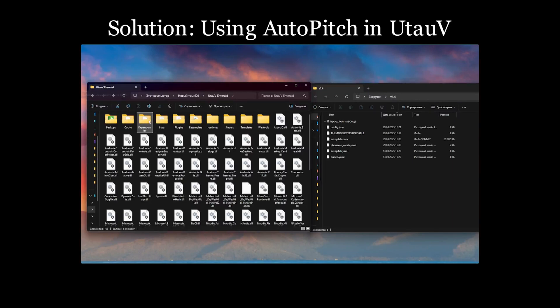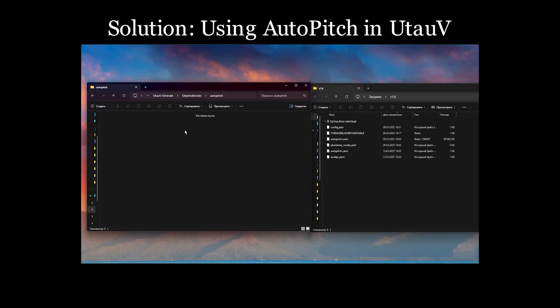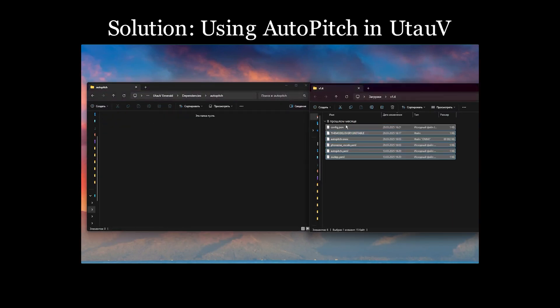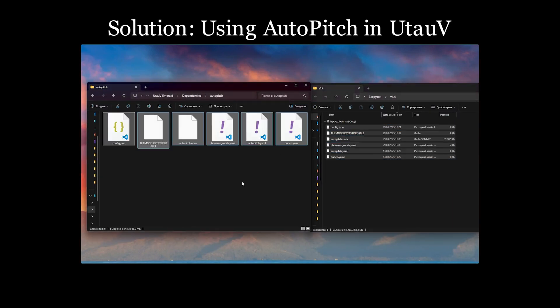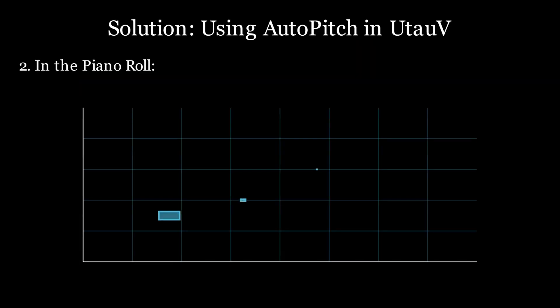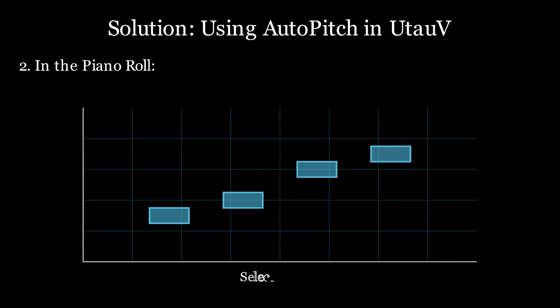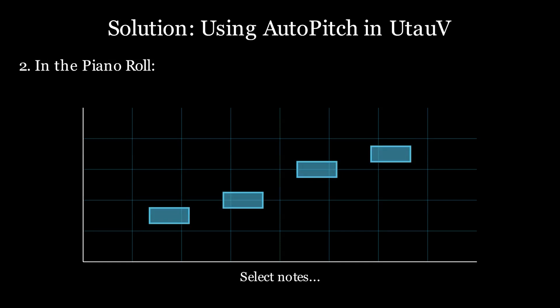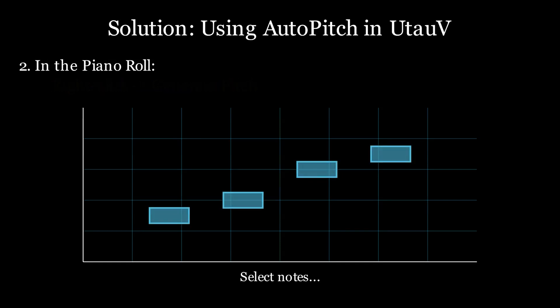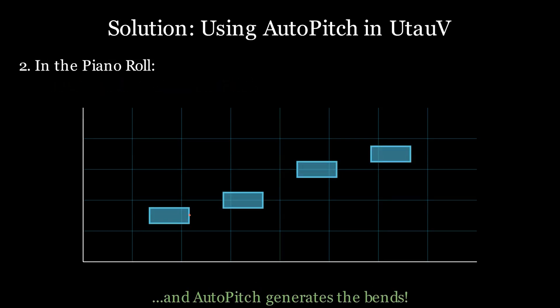First things first, place the model files in OpenUTAU into the AutoPitch folder in Dependencies. Then, in the piano roll, after selecting some notes, you can right-click on them and click on Generate Pitch, or press Control plus T on your keyboard.